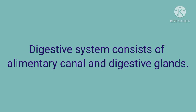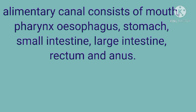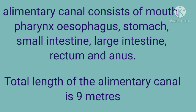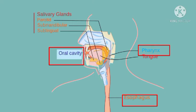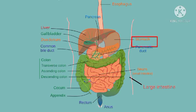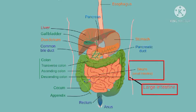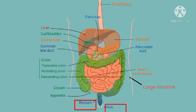The alimentary canal consists of the mouth, pharynx, esophagus, stomach, small intestine, large intestine, rectum, and anus. These are all the parts which combine to make the alimentary canal of the digestive system. The total length of the alimentary canal is 9 meters from mouth to anus. In the figure you can see the oral cavity, pharynx, esophagus, stomach, large intestine, small intestine, rectum, and anus.